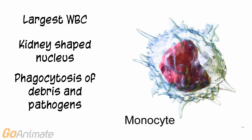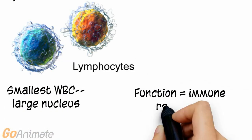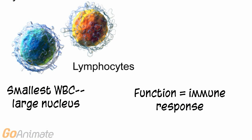Monocytes are called macrophages when they exist in tissue. Lymphocytes are the smallest white blood cells and have a large nucleus. There are several types of lymphocytes, but they all function in fighting off pathogens in our immune systems.